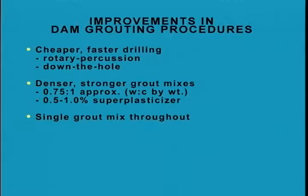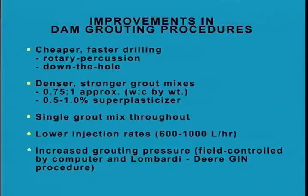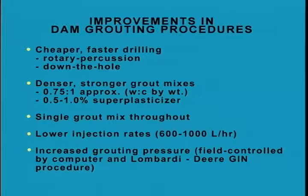The hardened grout is denser, stronger, and more resistant to chemical and mechanical deterioration. A single grout mix is commonly used throughout the grouting of a project instead of starting with a thin mix and progressively changing to thicker ones. Lower injection rates — as low as 2.5 to just over 6 gallons per minute (600 to 1,000 liters per hour) — are sometimes specified to give uniform grouting to the rock. Pressures allowed are often higher nowadays, and in many recent dams are controlled together with grout volume by the Lombardi GIN method — GIN meaning Grouting Intensity Number.